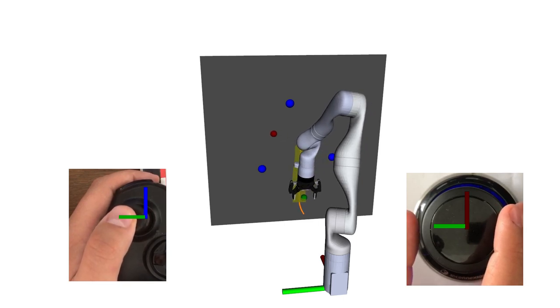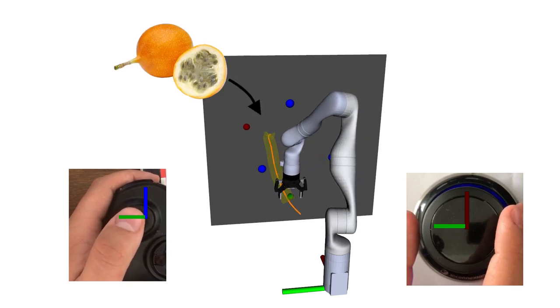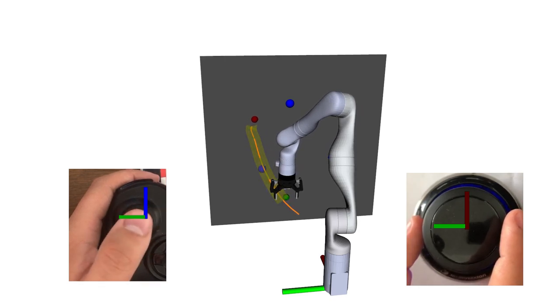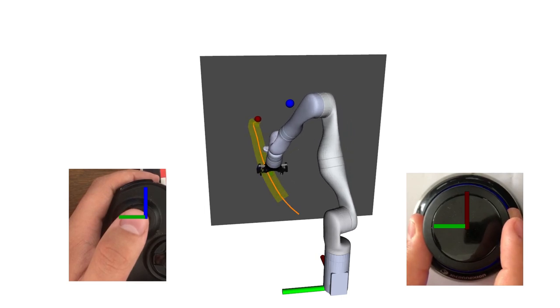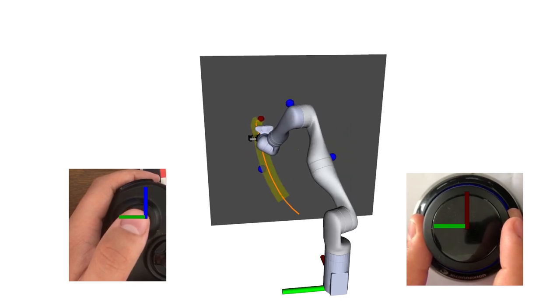Afterwards, the operator decides to also grab a granadilla, a delicious fruit found in Colombia. The vision system was not able to detect it, so the tube is not able to snap to it, but he would still be able to get it with a little more effort.